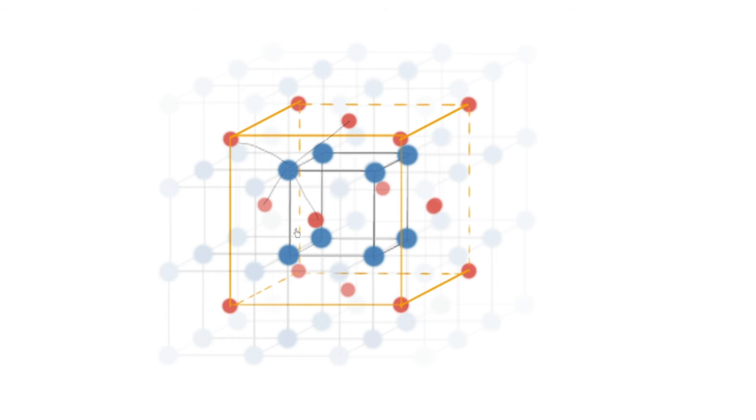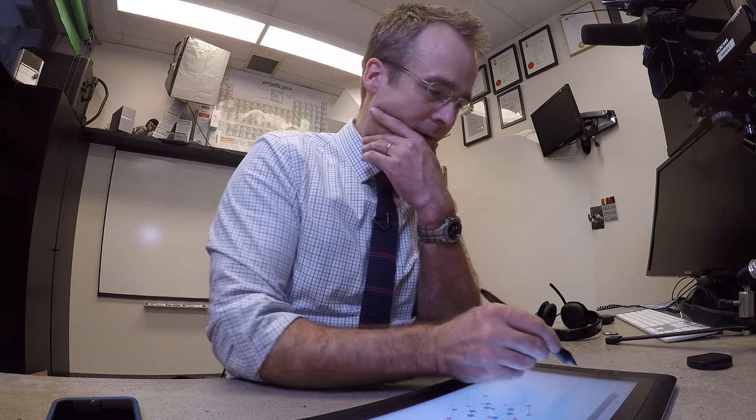Actually, each cation is touching eight anions. Remember that the anions are in a simple cubic lattice. So that is calcium fluoride: twice as many anions as cations, two different ways of looking at it.